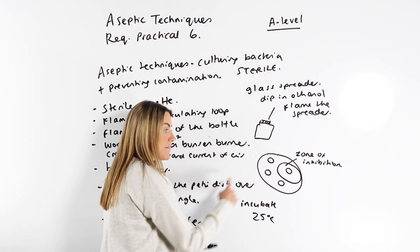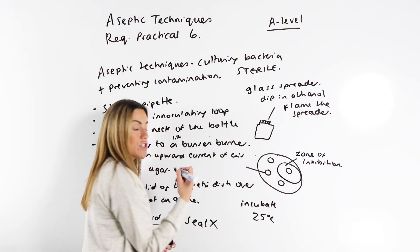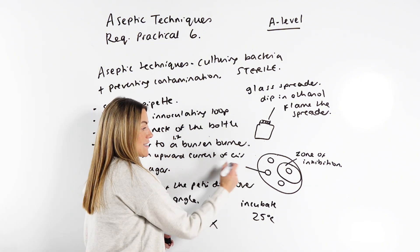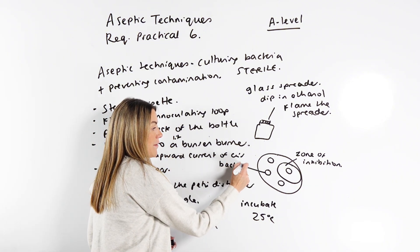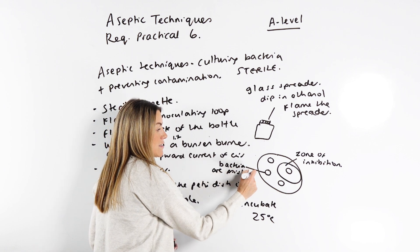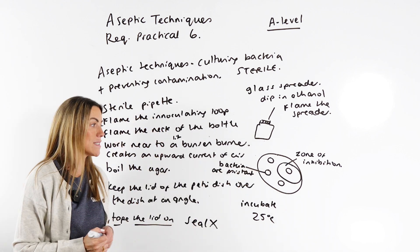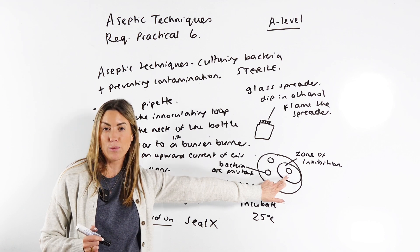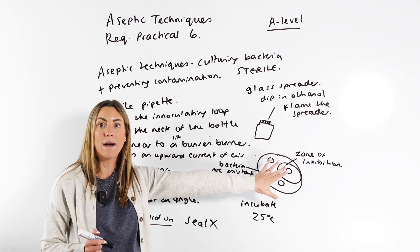If you don't see a zone of inhibition, like here, there's no zone of inhibition. That's telling you that the bacteria are resistant to that particular antibiotic, whereas obviously, they're susceptible to this one because they were killed by it.